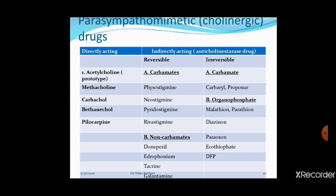Dear student, this is the second session on drugs acting on the parasympathetic system. In the previous session, we discussed the biosynthesis of acetylcholine, different types of receptors on which acetylcholine acts, and the pharmacological effects of acetylcholine through muscarinic and nicotinic receptors.